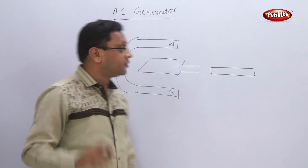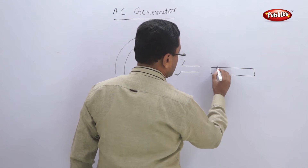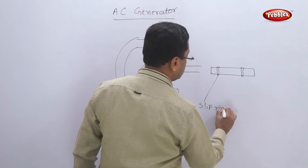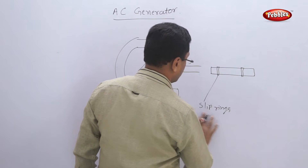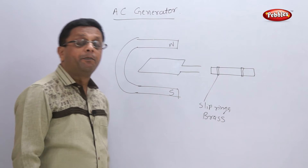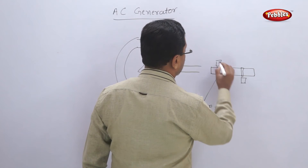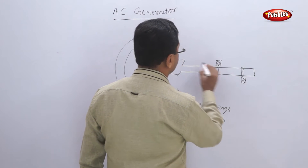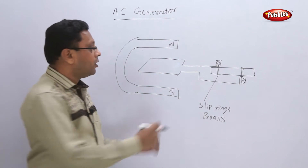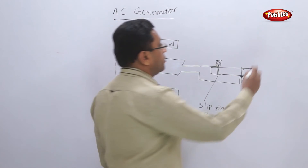The only difference is that in the case of the AC generator, we use slip rings. There are two slip rings, made up of brass. These two slip rings are there, and of course carbon brushes are also there. One end of the carbon brush is attached to one slip ring and another end is attached to the other slip ring. Both slip rings move along with the coil.